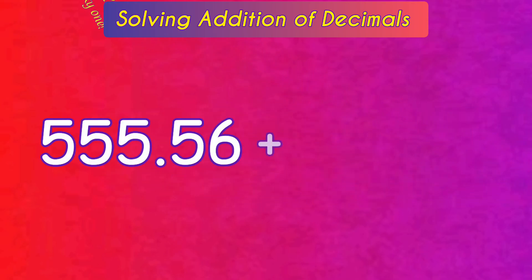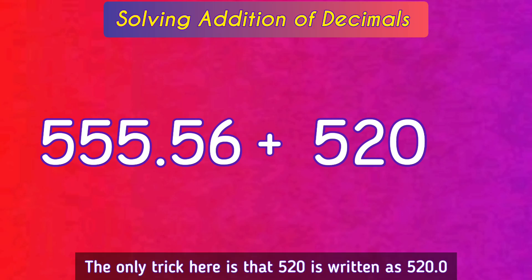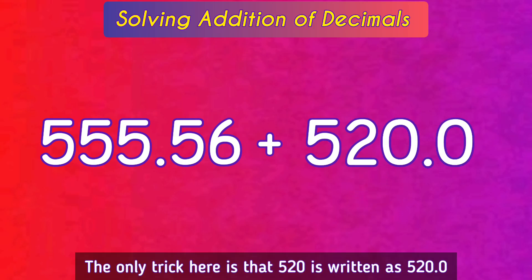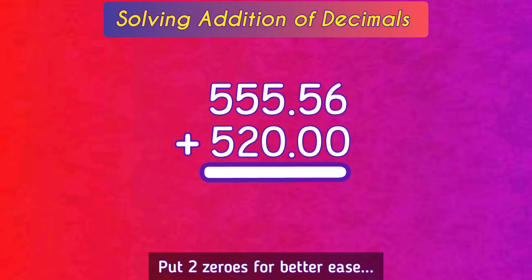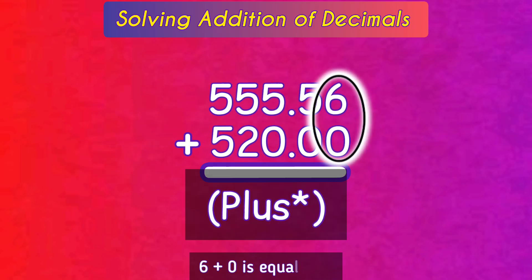Now let's try a tricky one: 555.56 plus 520. The important thing is that 520 is written as 520.0. Arrange the following as shown and put two zeros for better ease.